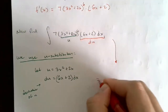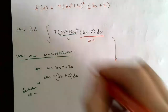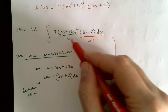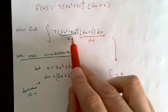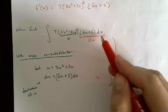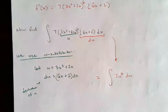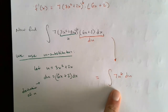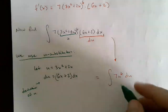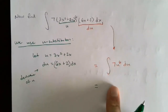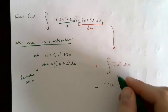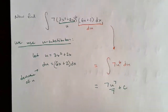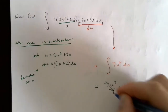After substitution, the integral becomes: 7 · u^6 du, since (3x² + 2x) is replaced by u and (6x + 2) dx is replaced by du. There are no x's left — that's the goal. Taking the anti-derivative: the integral of 7u^6 du gives 7 · u^7/7, and the sevens cancel, leaving u^7 + C.